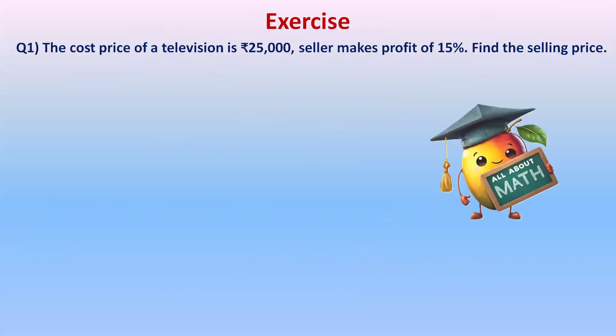Example 1: The cost price of a television is 25,000 rupees and the seller makes a profit of 15 percent. Find the selling price. Since profit percent is given, the addition will be done in the numerator. Cost price = 25,000 rupees and profit percent = 15%.